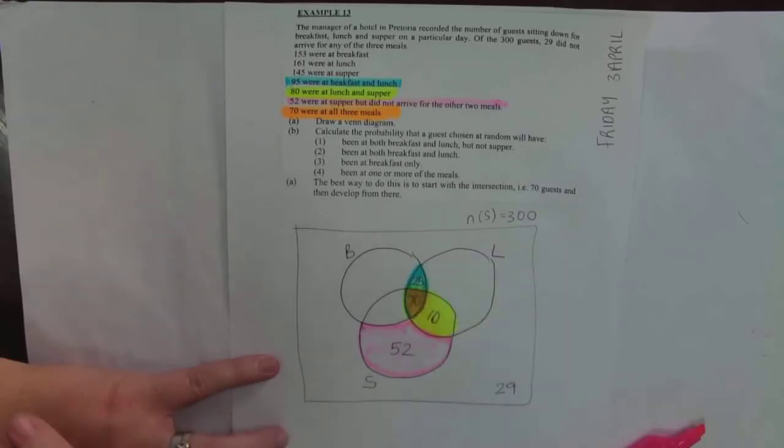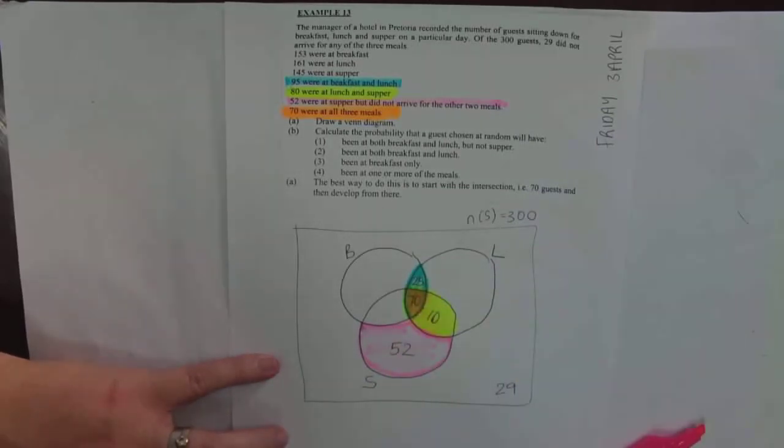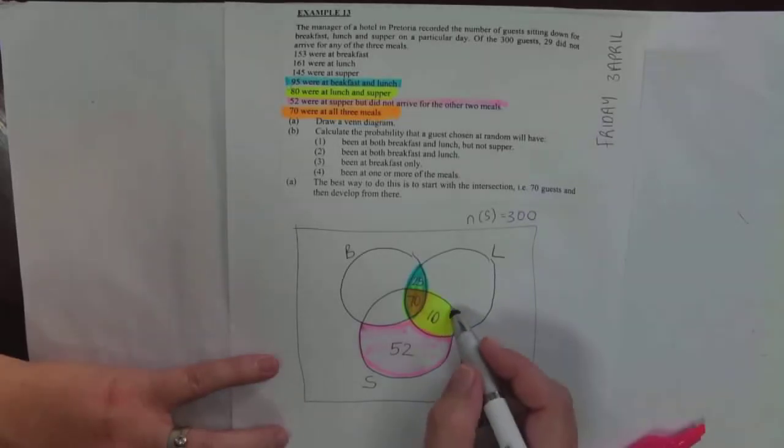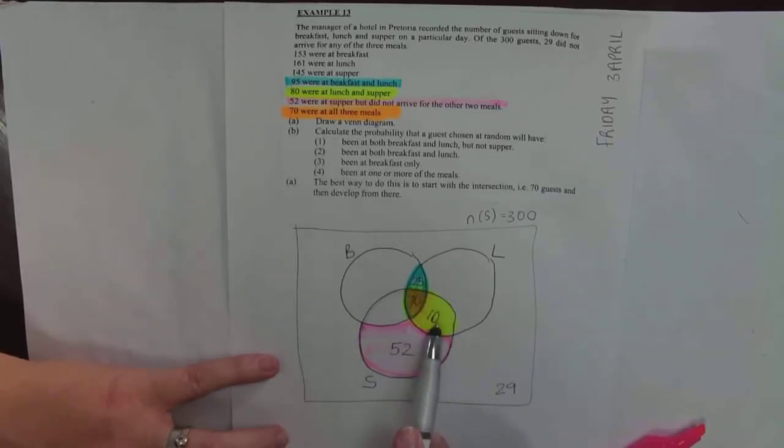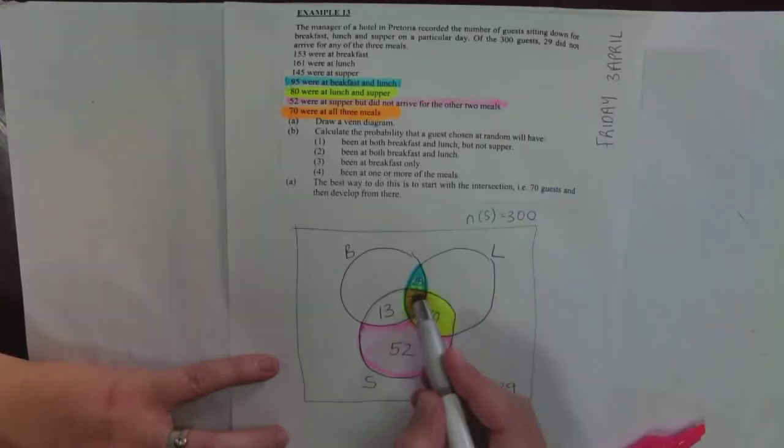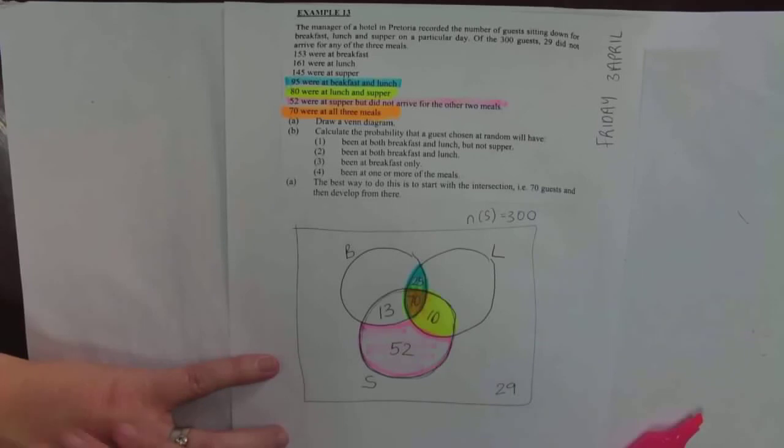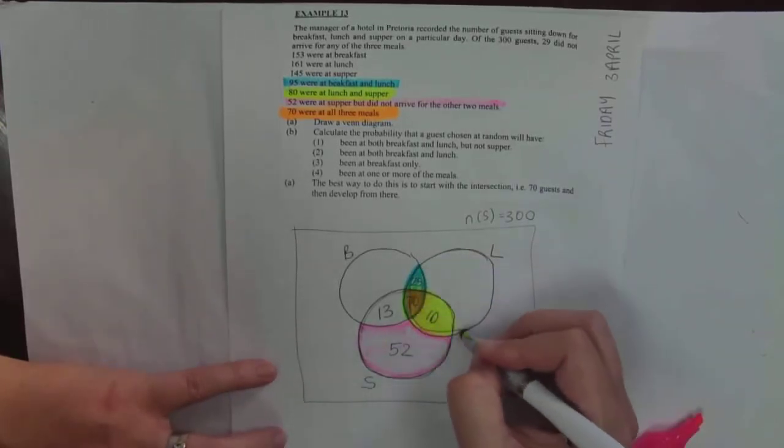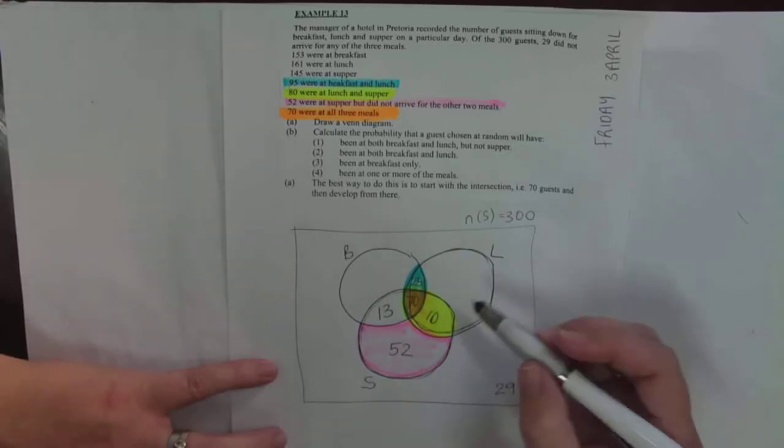145 were at supper, so this entire event must equal 145. So if I add that, that's 80 plus 52, that's 132. What am I missing? 132 to 145, I get 13.